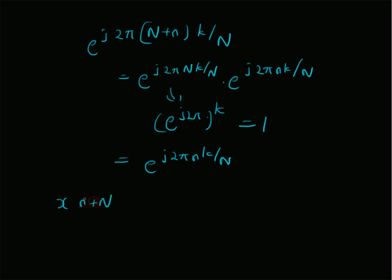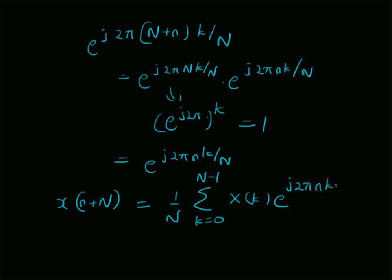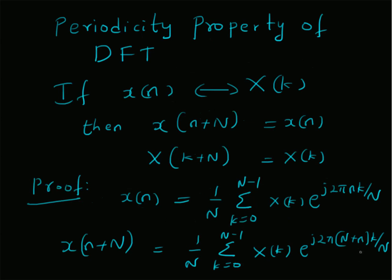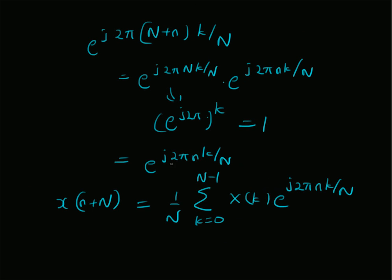Therefore, x of n plus capital N becomes 1 by N, summation k equal to 0 to N minus 1, X of k, e power j 2 pi small n k by capital N. We can easily identify this summation as the definition of the IDFT of x of n. That is, the summation is indeed equal to x of n. Therefore, x of n plus capital N is equal to x of n. In other words, x of n will be a periodic function with period equal to N.